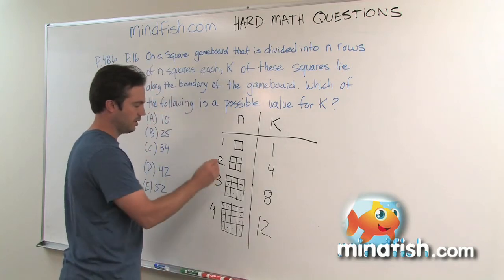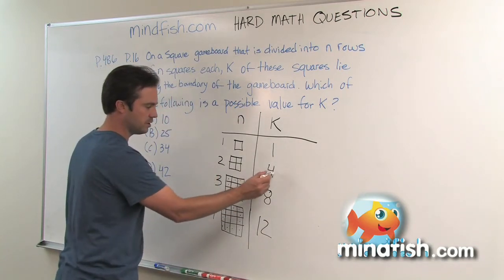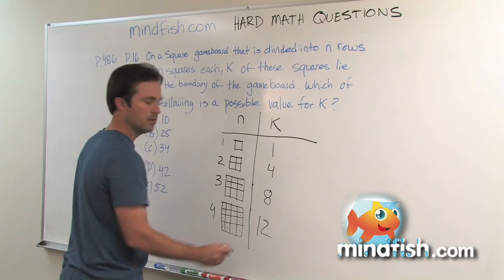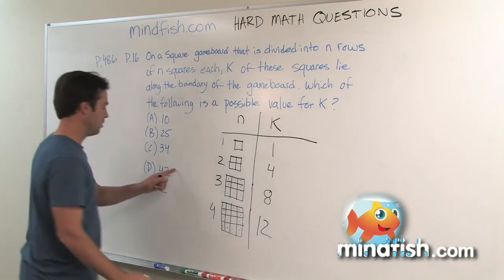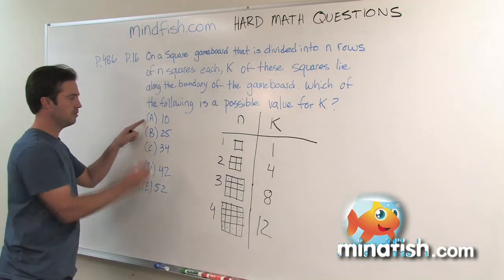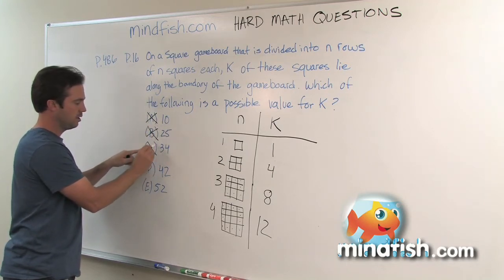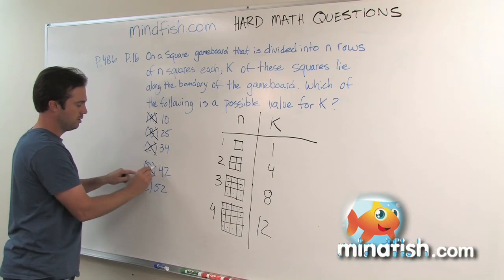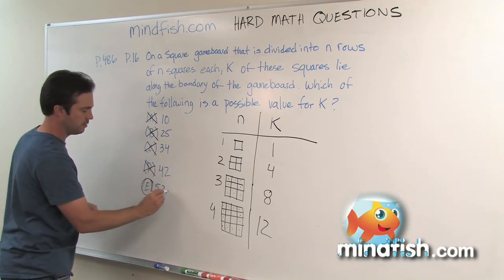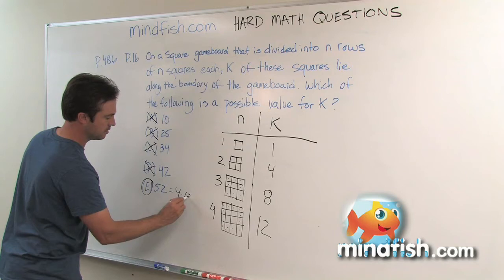So what you can see here is once we go from 2 to 3 to 4, we're just dealing with multiples of 4. So we're coming over here and saying is 10 a multiple of 4? No. Is 25 a multiple of 4? No. Is 34? No. Is 42? No. But 52 is, and 52 is 4 times 13.